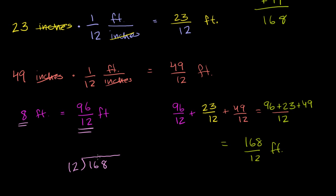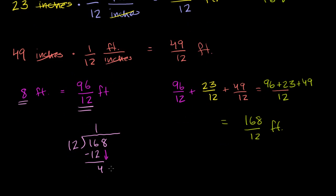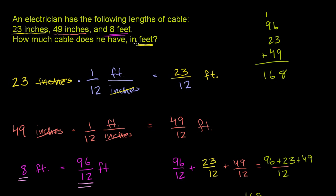It doesn't go into 1. It goes into 16 exactly one time. 1 times 12 is 12. We subtract, 16 minus 12 is 4. Bring down the 8. 12 goes into 48 four times. 4 times 12 is 48, and we have no remainder. So 168 over 12 is exactly 14. So this is exactly equal to 14 feet. So our electrician has exactly 14 feet of cable.